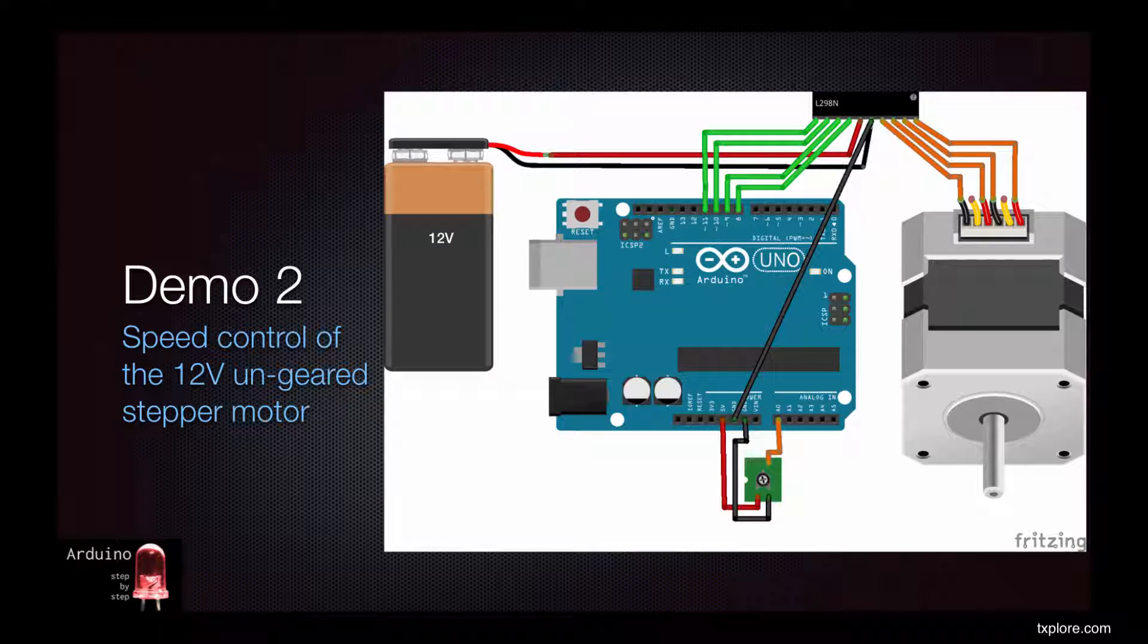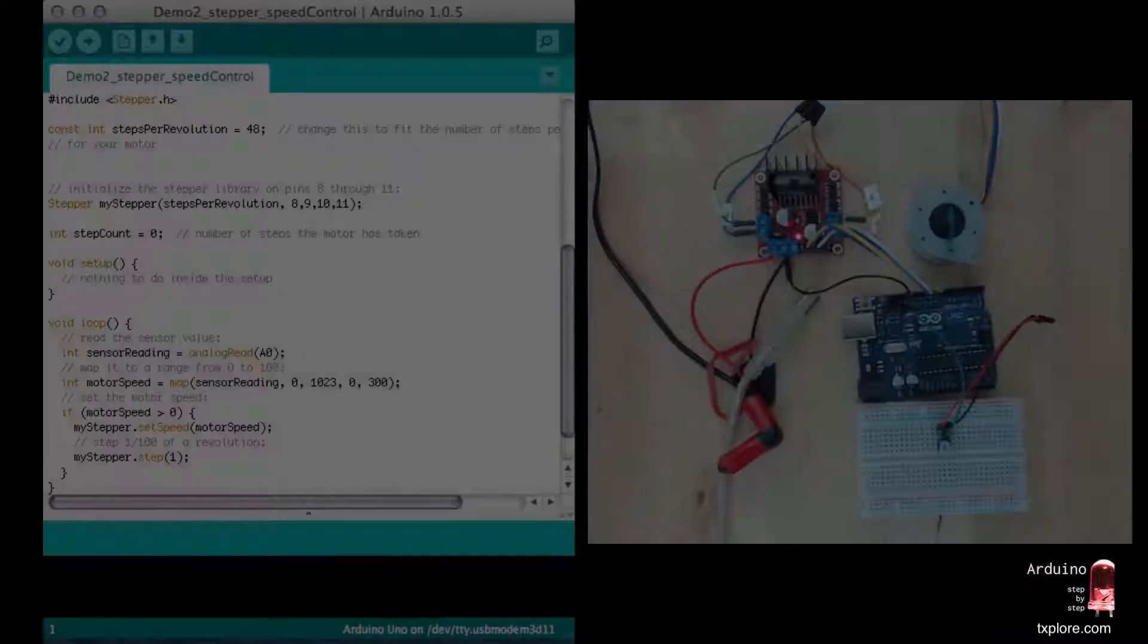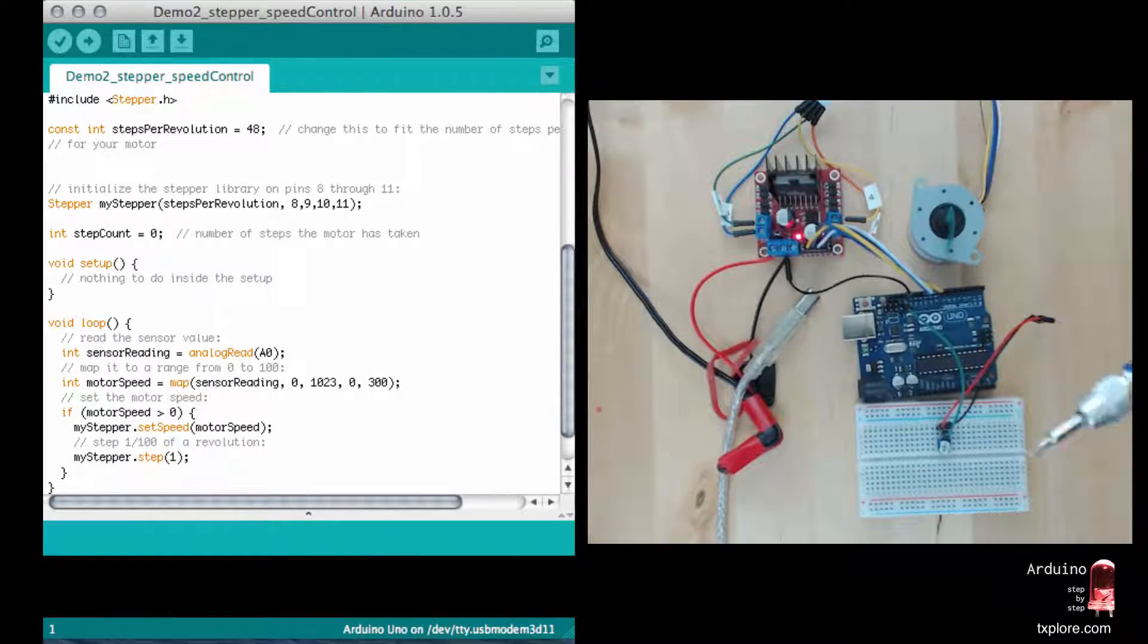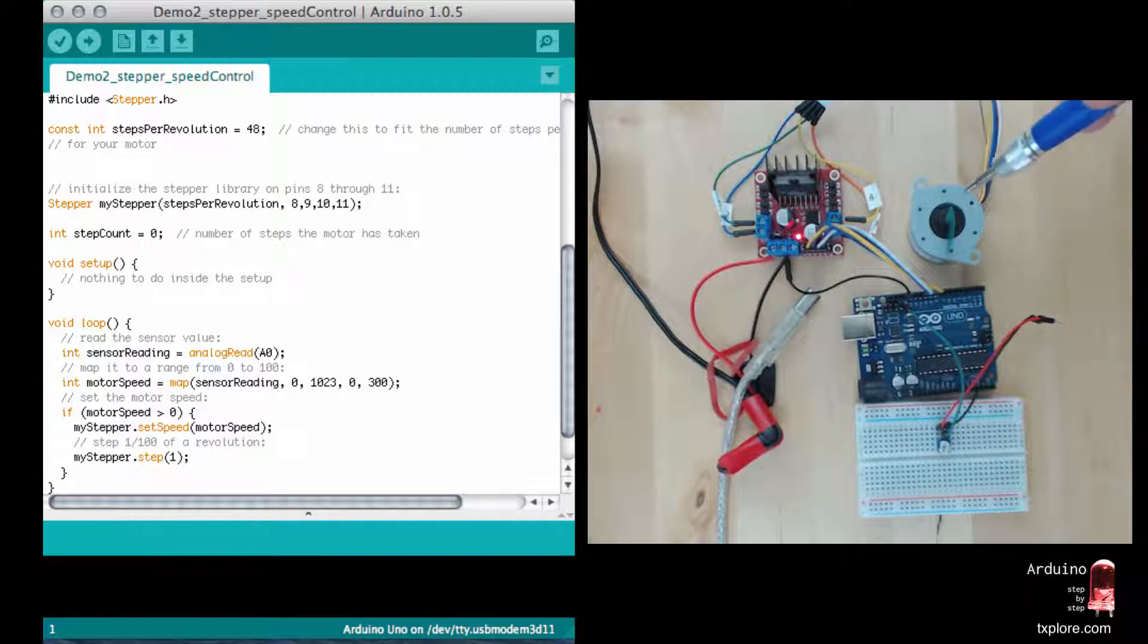Apart from the potentiometer, everything else in this circuit remains the same. So what we'll do now is we'll connect the potentiometer to the Arduino, take analog measurements of the potentiometer's resistance, and use that to control the speed of rotation of the motor.